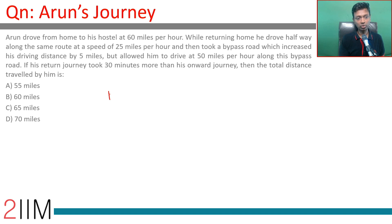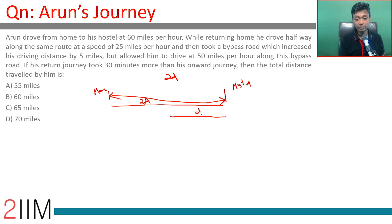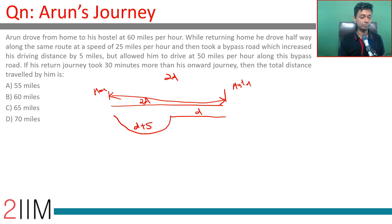Let's say he goes from home to hostel — let's say this is a distance of 2D. We use 2D because there is a number which says half the distance, so he takes this route of 2D one way. The second time around, he drove half the route D and then took a bypass which increased the distance by 5 miles, making it D plus 5. This is the bypass.